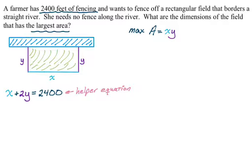We have too many variables — a, x, and y. The helper equation is going to help. I'm going to solve for x. You could solve for x or for y; it doesn't make a difference. Usually you look at what you're optimizing to see which is easier, but here it's just x times y, so it doesn't matter. We'll rewrite the area as a function of y.